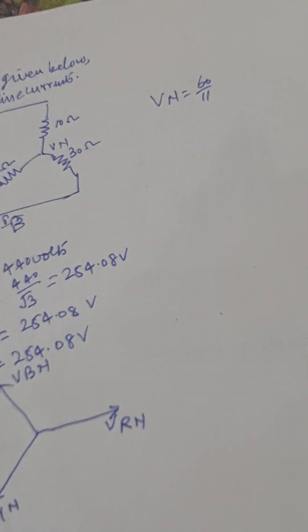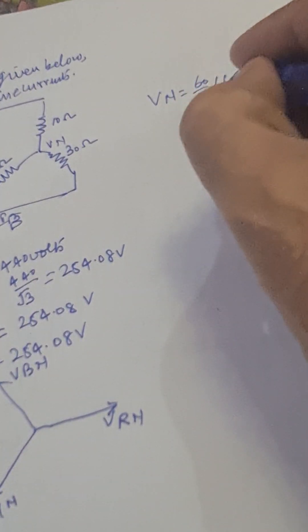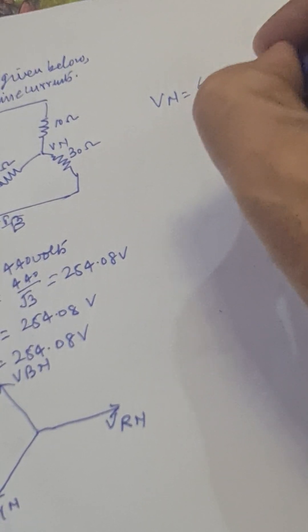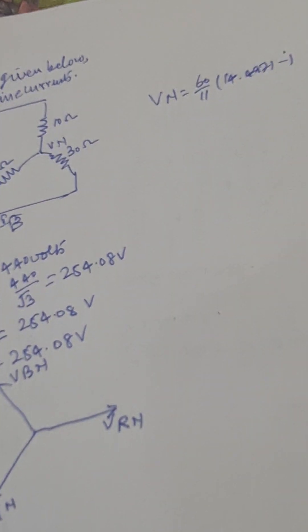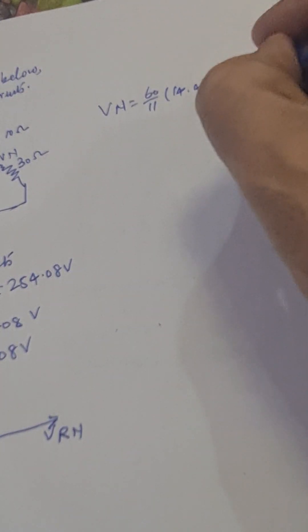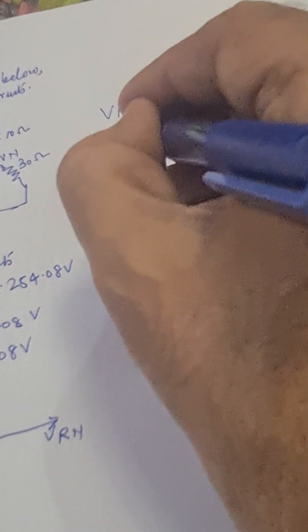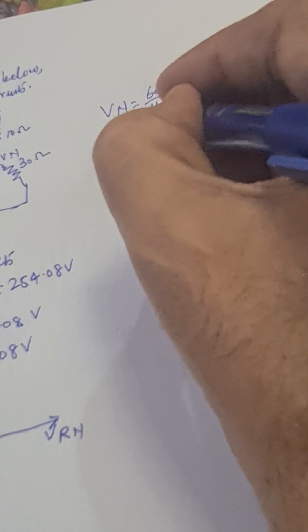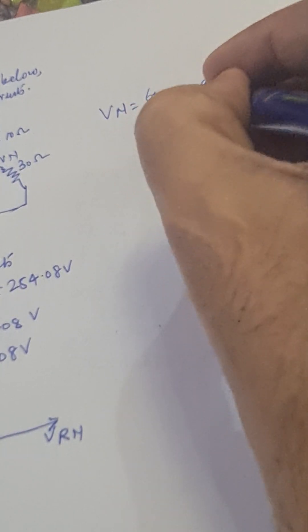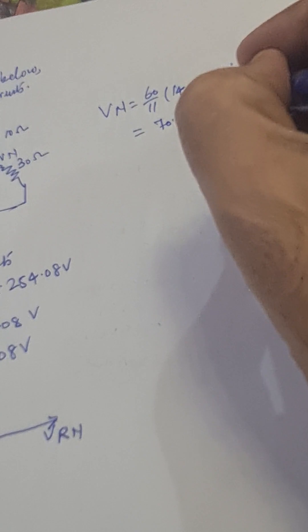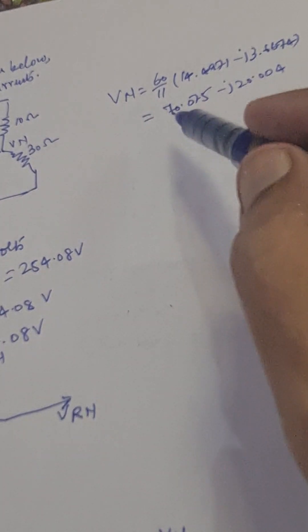Multiplying by 60/11, we get VN equal to (14.4971 − j3.6674) × (60/11), which becomes 70.075 − j20.004. So this is the neutral voltage VN.